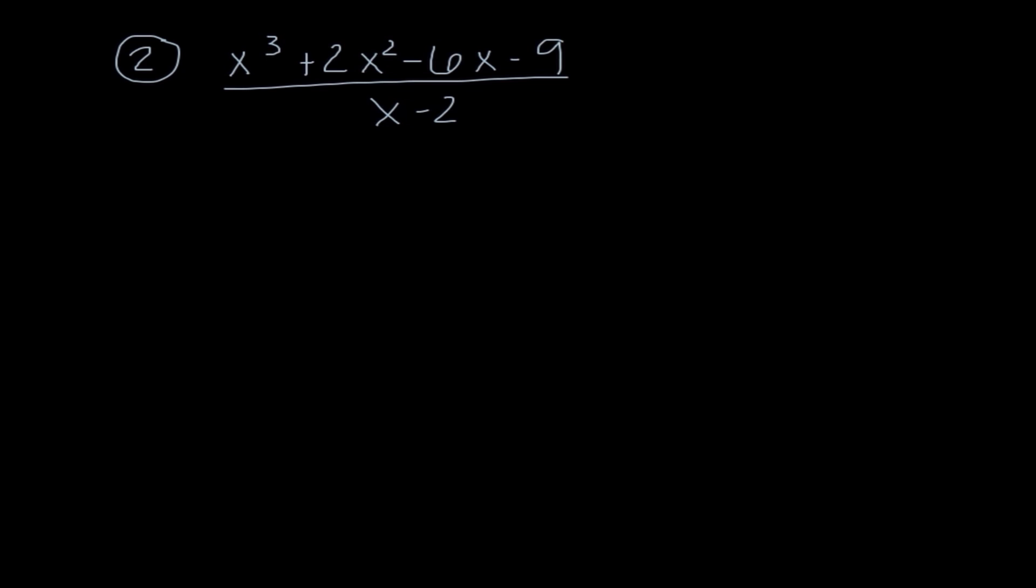So number 2, let's go ahead and set up. We know we can use synthetic division because my divisor is linear and it has a leading coefficient of 1. So when I set this up, we have 1, 2, negative 6, negative 9. Once again, I was not missing any terms. Our box number this time is going to be 2 because when I set x minus 2 equal to 0, our x value would be 2.